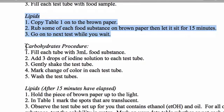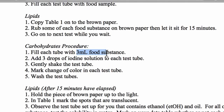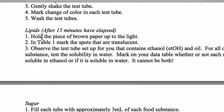For the carbohydrate procedure, I want you to call it the iodine test. You can see we're going to start with three mils of a food substance, add three drops of iodine, gently shake the tube by swirling, and then notice any change in color. Remember, iodine starts as yellow and in the presence of starch it's going to turn blue-black. This next part talks about what we're going to do after 15 minutes.